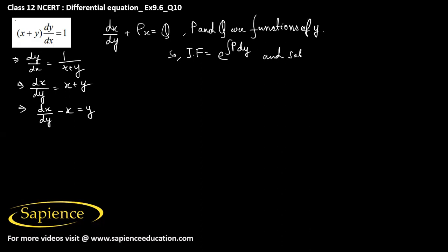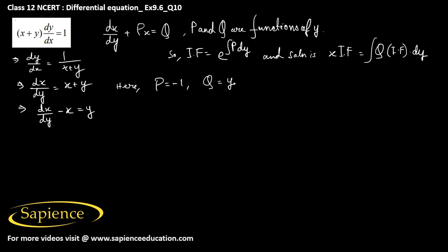The solution will be x times the integrating factor equals the integral of Q times the integrating factor dy. Here you can see P is minus 1 and Q is y. Therefore the integrating factor will be e raised to the integral of minus 1 dy, which is e to the power minus y.